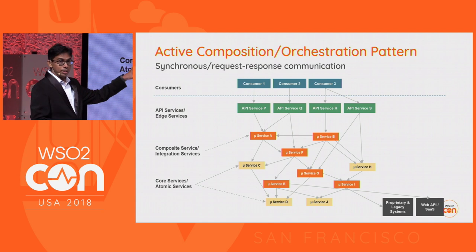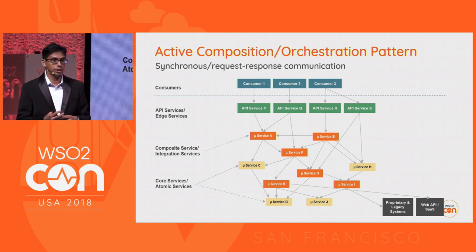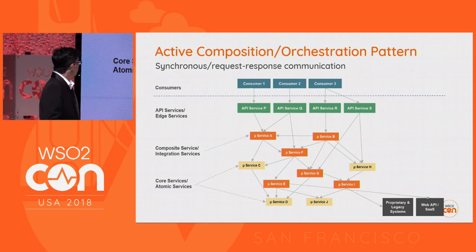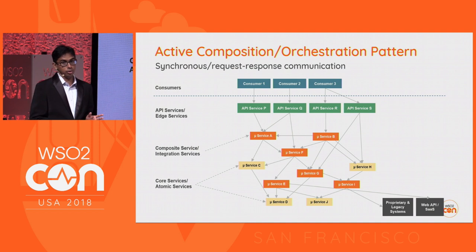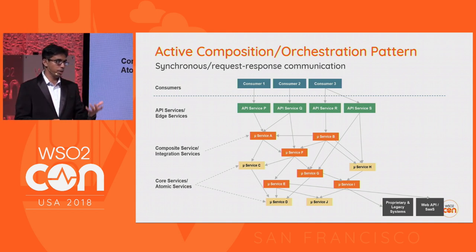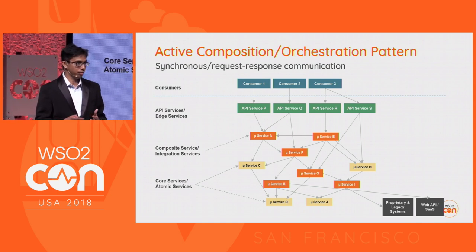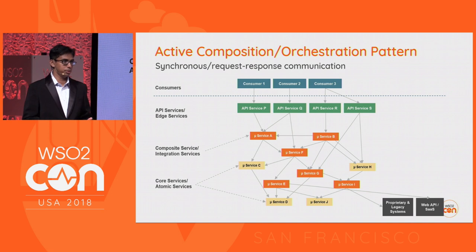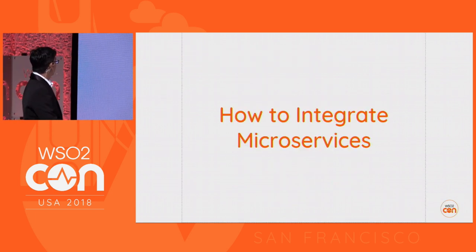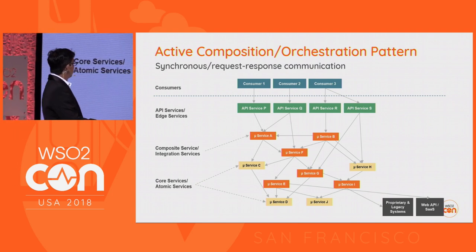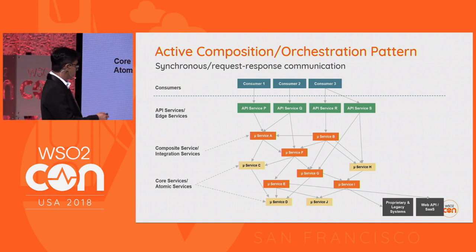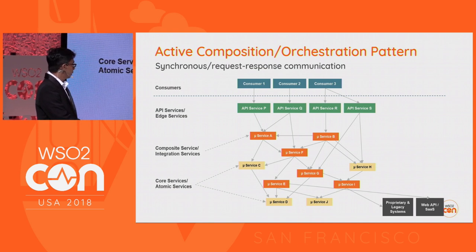Those API services are centrally governed — things like throttling, versioning, and observability may be done through a connected control plane. The core concept behind active composition is synchronous messaging, meaning you always have the request-response type of messaging. This is ideal for implementing services that are more interactive. The microservices implementation can also talk to existing systems like legacy systems or external web APIs through a separate service layer.